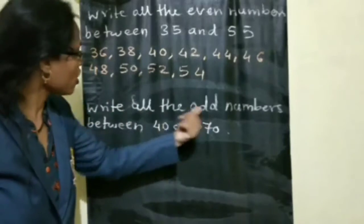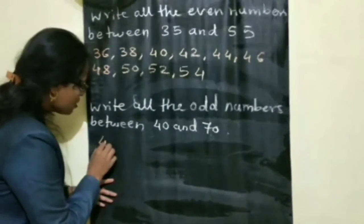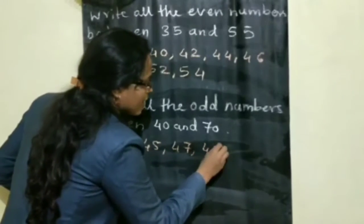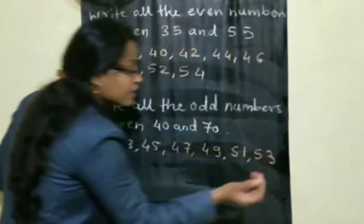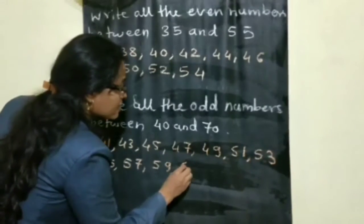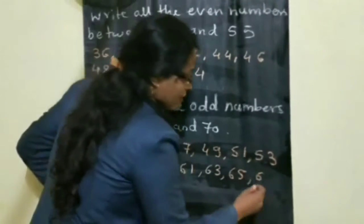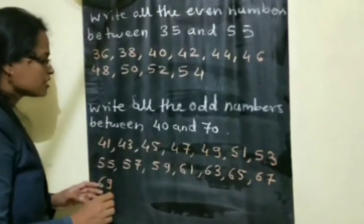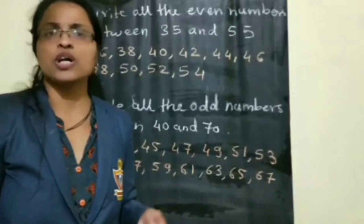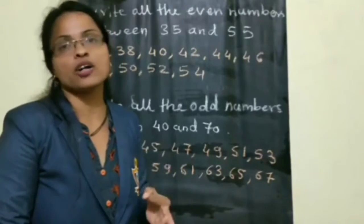Next question: write all the odd numbers between 40 and 70. Between 40 and 70, we find: 41, 43, 45, 47, 49, 51, 53, 55, 57, 59, 61, 63, 65, 67, 69. These are all the odd numbers between 40 and 70. However they ask the question, you must understand and write the answer — you need to know your prime, even, odd, and composite numbers.